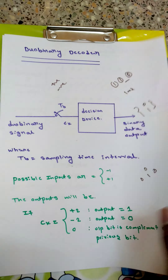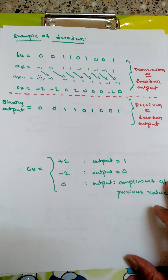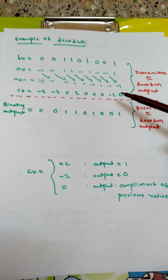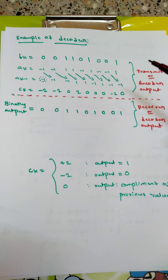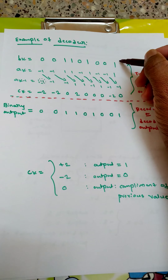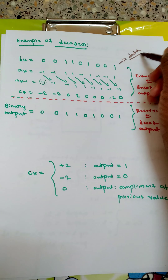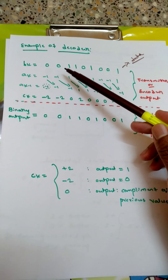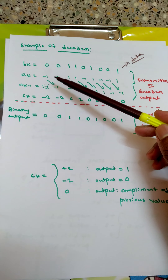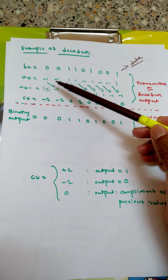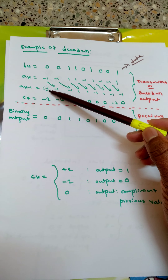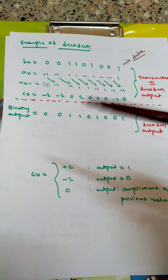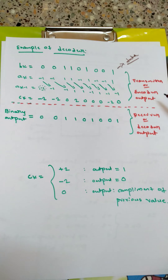Now let us go to the example of the duobinary decoder. For simplicity I have used the same example as the previous video. bk is the input data: 0 0 1 1 0 1 0 1. ak is the polar representation — zero is written as minus one and one as plus one. The delayed version ak-1 is shifted by one bit, with an assumed bit shown as d.